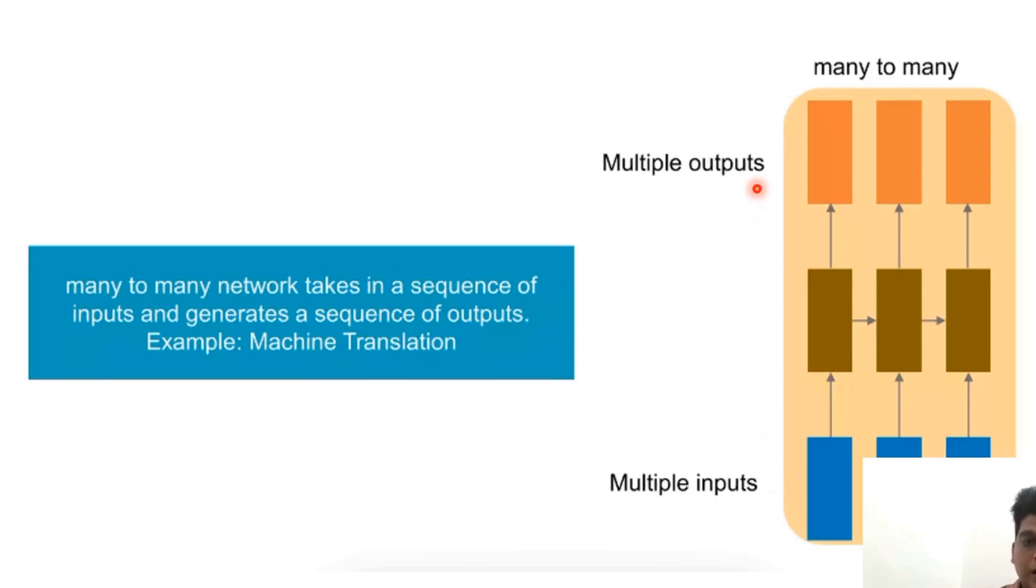Many-to-many has multiple inputs and multiple outputs. It takes in a sequence of inputs and generates a sequence of outputs. An example is machine translation, translating from one language to another language.